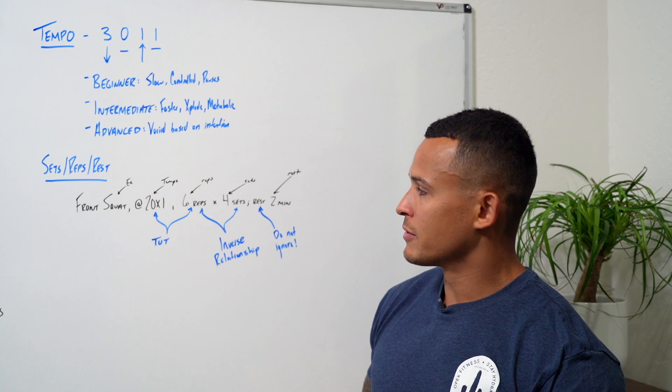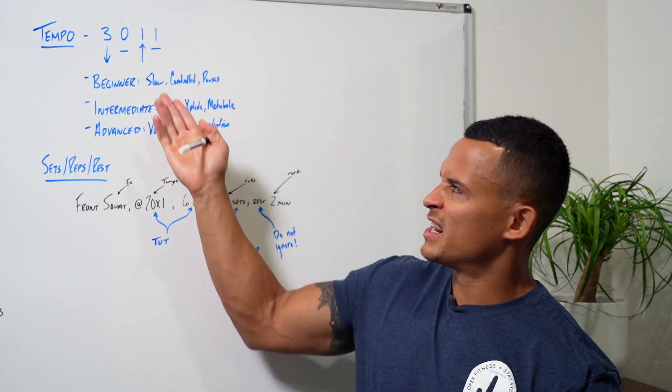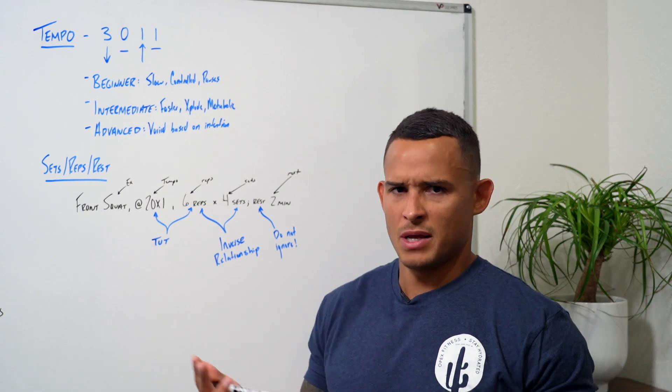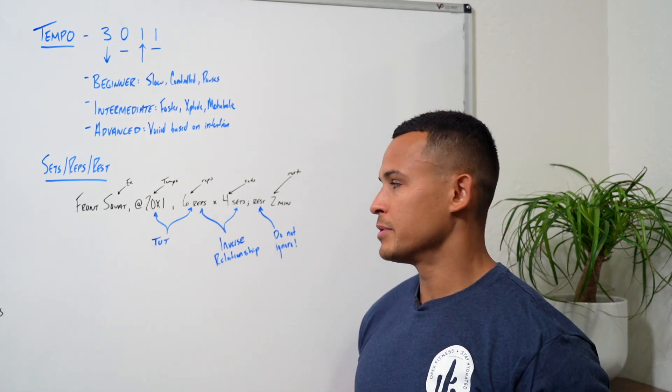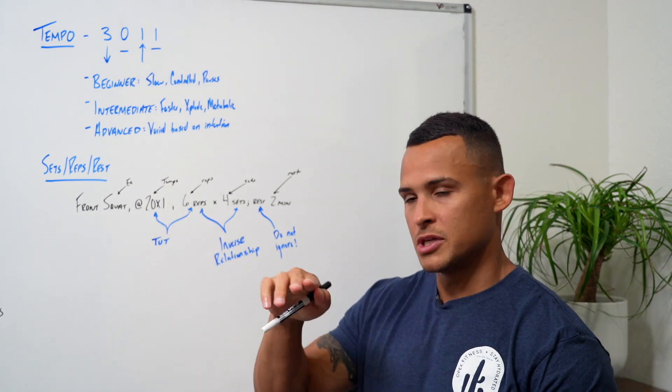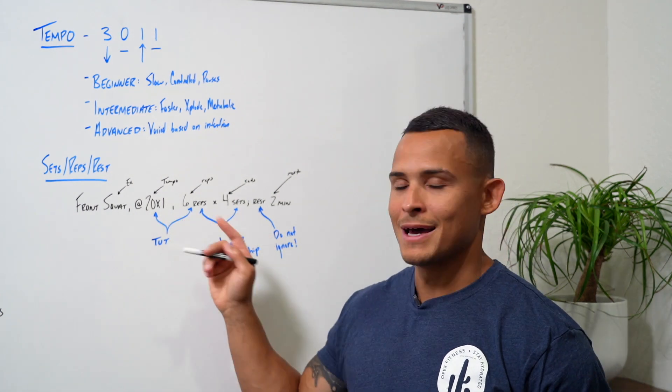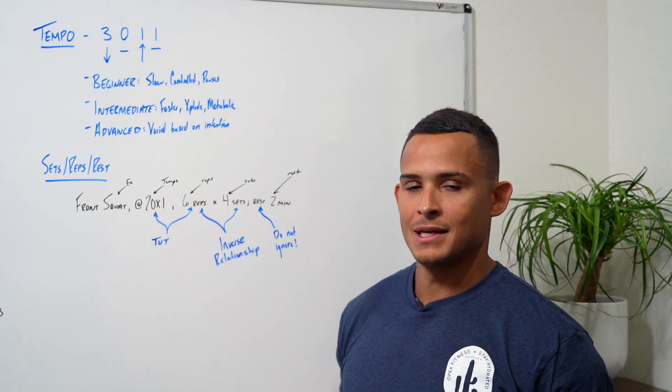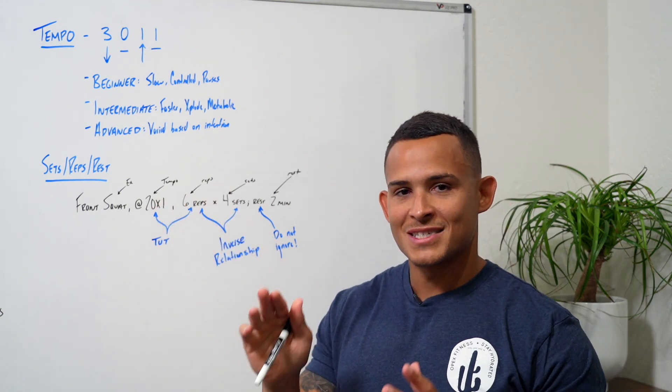Next, let's talk about time under tension. And we kind of hit it here in the tempo piece, but we have to really think about how we utilize time under tension and what it means. Time under tension is simply taking the total amount of time in the tempo, so per repetition, and you're multiplying it by the number of reps, right? So you multiply tempo by reps, and that's how many seconds each set is. So that's your time under tension per set.